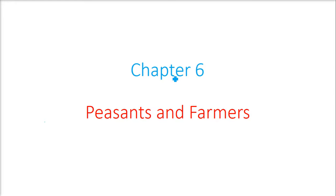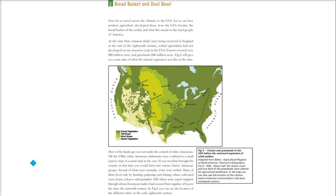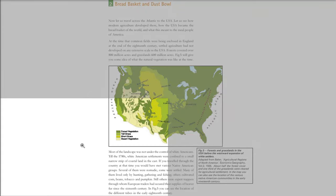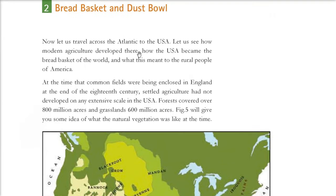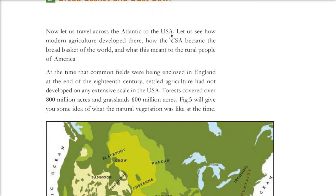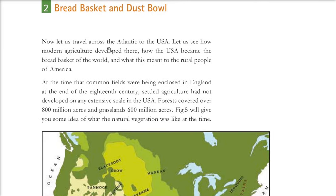This is Chapter 6: Peasants and Farmers. In the last discussion we covered England and the conditions of peasants and farmers in the late 18th and early 19th century. Now I will discuss the USA, United States of America, where the modernization of agriculture took place, because of which the name 'bread basket' was given to this place.